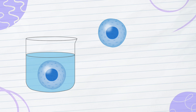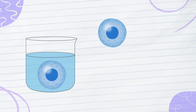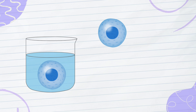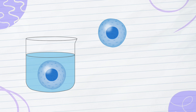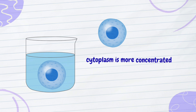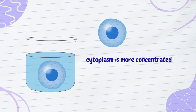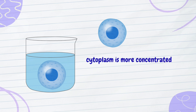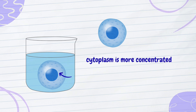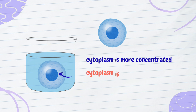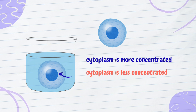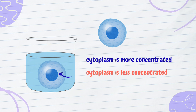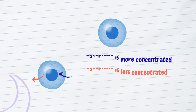The water molecules move in and out of the cell based on the concentration of the cytoplasm and the fluid outside the cell. If the cytoplasm is more concentrated than the fluid outside, water molecules move by osmosis into the cell. If the cytoplasm is less concentrated than the fluid outside, water molecules move by osmosis outside the cell.